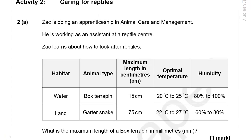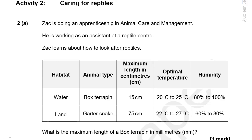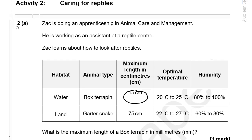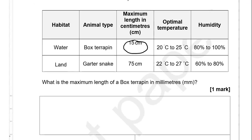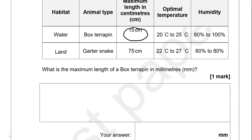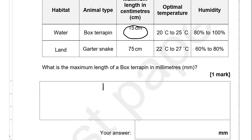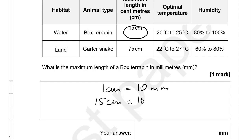What is the maximum length of a box terrapin in millimetres? In centimetres that is 15. We are going to convert it into millimetres. In 1 centimetre there are 10 millimetres, so in 15 centimetres there will be 10 times more — that's 10 times 15, which is 150 millimetres.